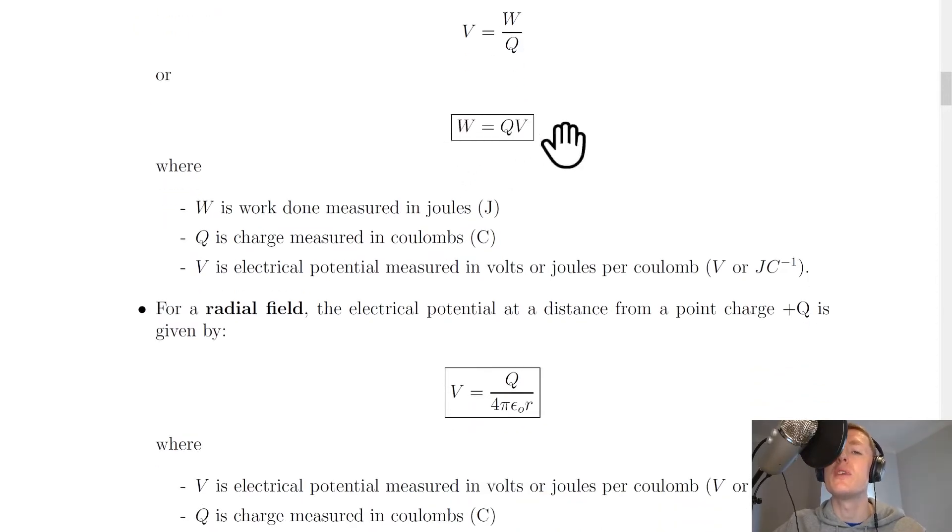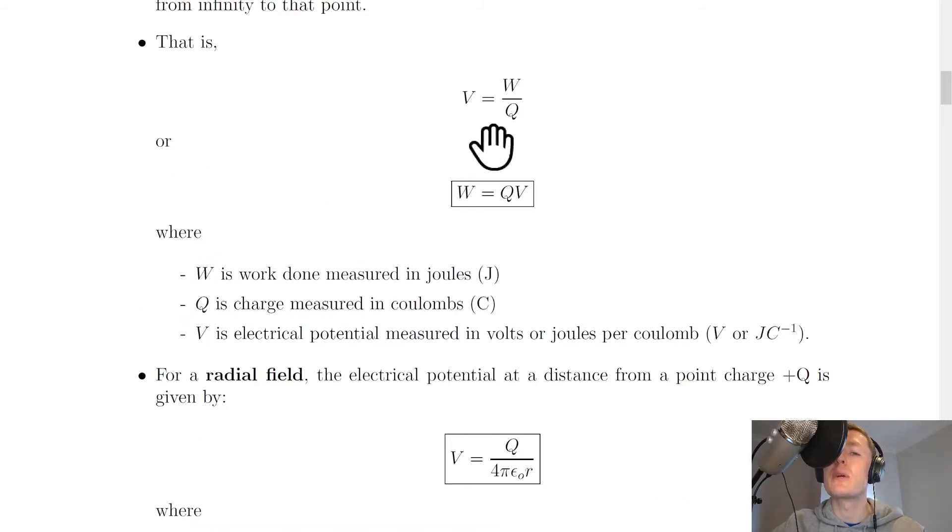And this is one that you might remember from the higher physics course where we looked at forces on charged particles. Where W is the work done measured in joules, Q is charge measured in coulombs, and V is electrical potential measured in volts or joules per coulomb. And you can see that we get joules per coulomb when you look at this form of the equation for one volt equals one joule divided by coulombs.